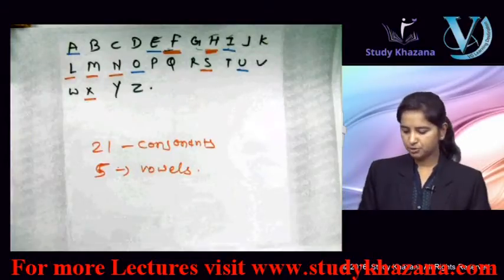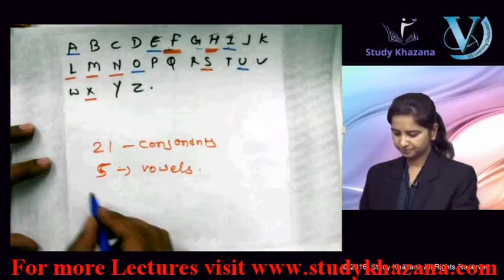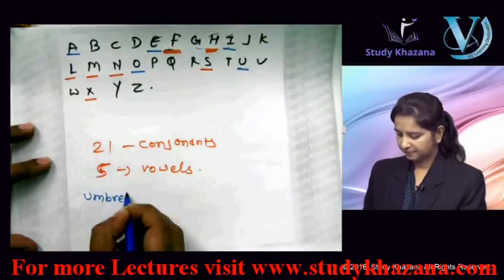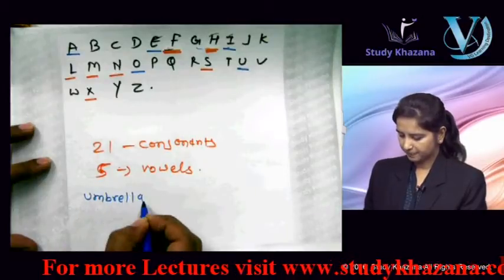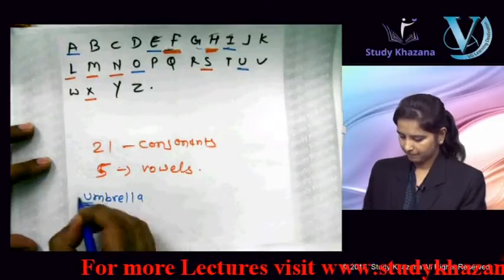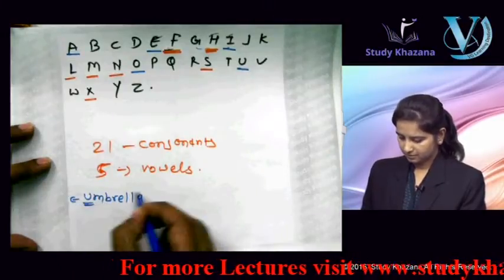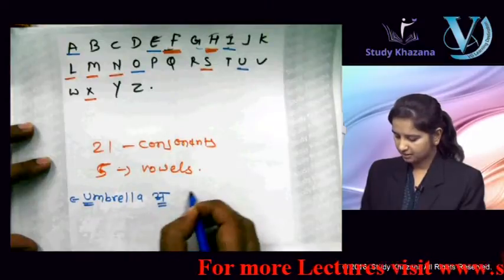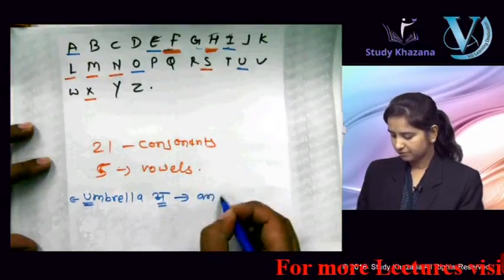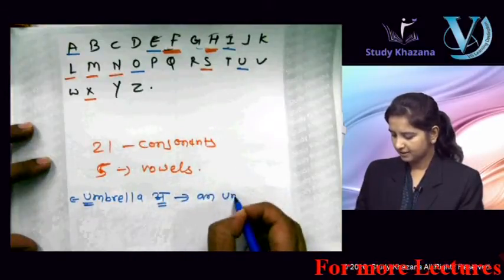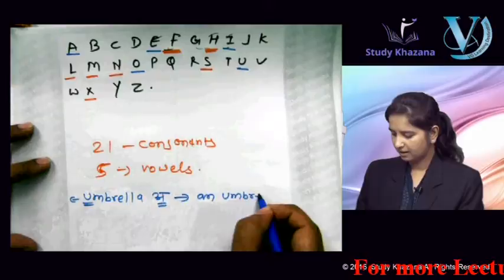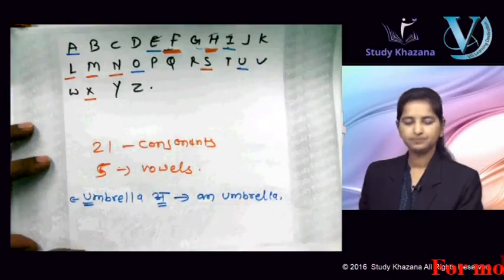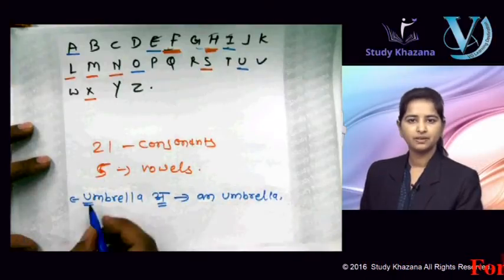For example, if you say 'umbrella' — the pronunciation is 'u' (vowel sound). So we will use 'an umbrella.'